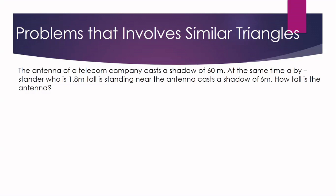Let us start with Problem Number One. The antenna of a telecom company casts a shadow of 60 meters. At the same time, a bystander who is 1.8 meters tall is standing near the antenna and casts a shadow of 6 meters. How tall is the antenna?